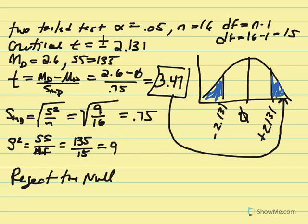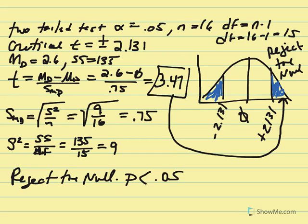We reject the null. Our p value is less than alpha 0.05. We conclude that the quality of an object is affected by the person purchasing it — buying something at a lesser price doesn't mean we think it's lower quality, but if someone else buys it cheaply, we may question the quality.